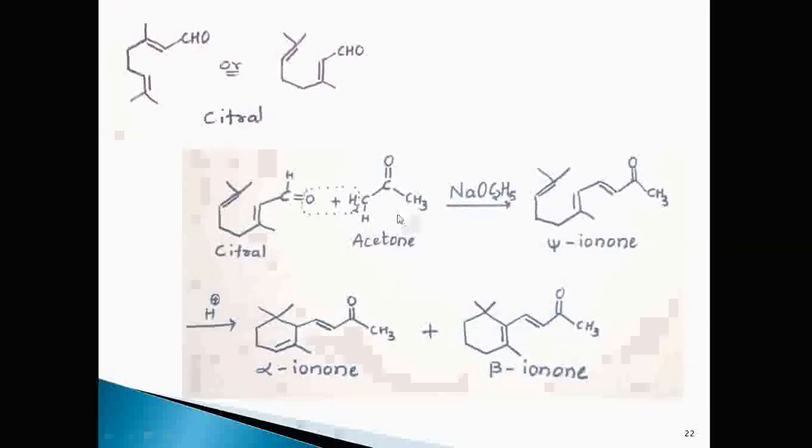Citral on condensation with acetone in presence of base gives product aldol that is gamma ionone. This is called aldol condensation. This gamma ionone in presence of acid undergoes cyclization and gives mixture of two products alpha ionone and beta ionone. Thus, alpha and beta ionones are synthesized using citral.